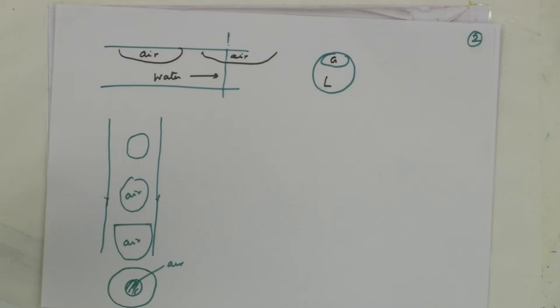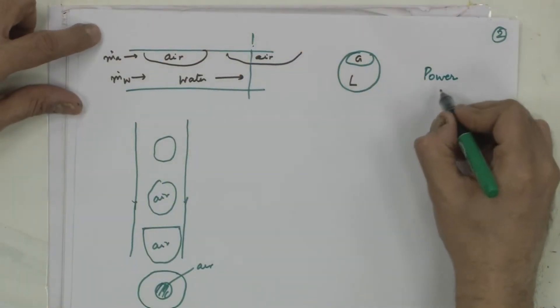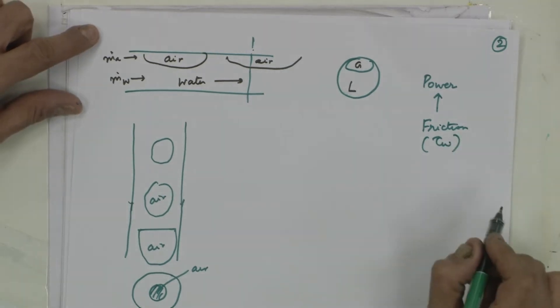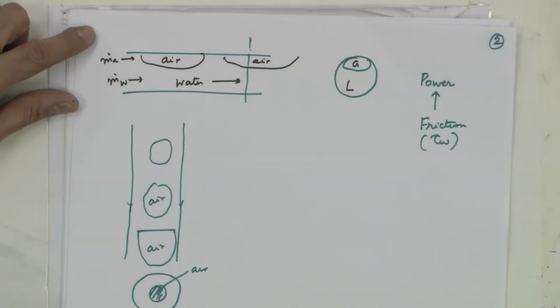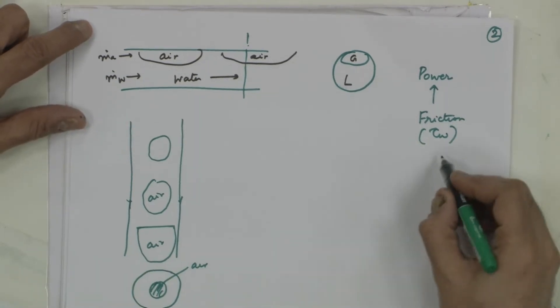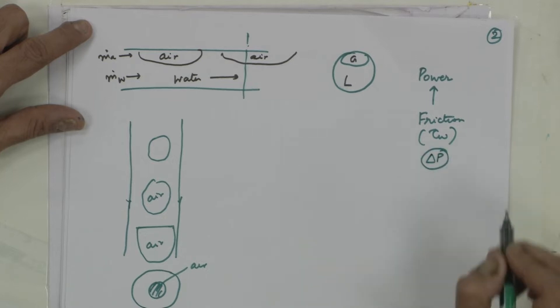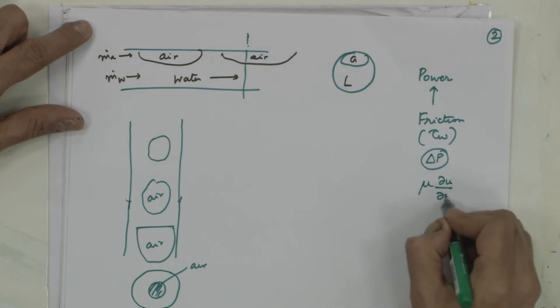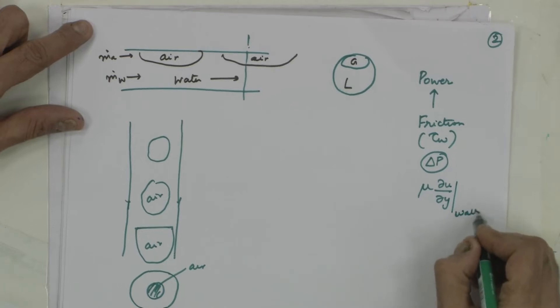As engineers, what are we interested in? Power loss — friction — which is wall shear stress, whose manifestation is pressure drop. Wall shear stress is given by μ·(du/dy) at the wall. I am talking only about hydrodynamics for now; we will come to heat transfer also.